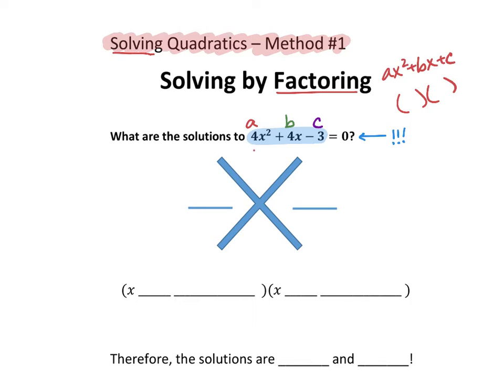If you remember, a times c goes in the top of the x-puzzle, so for this one, 4 times negative 3 is going to be negative 12. And b goes in the bottom, so 4 goes down here. The number that goes underneath the fraction bar in the sides is a, so we're going to put a 4 here.